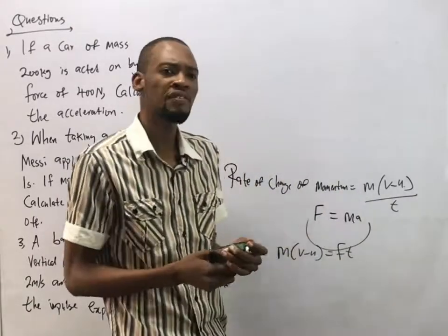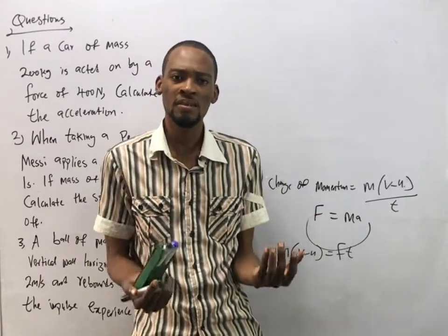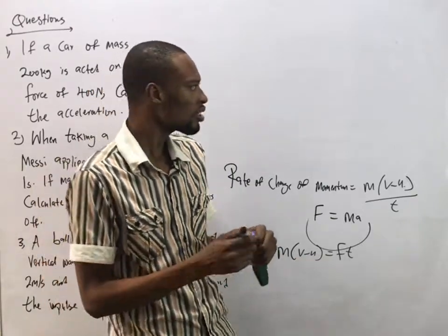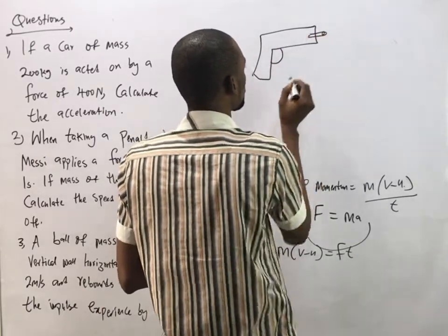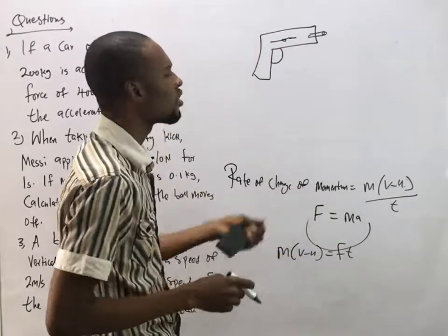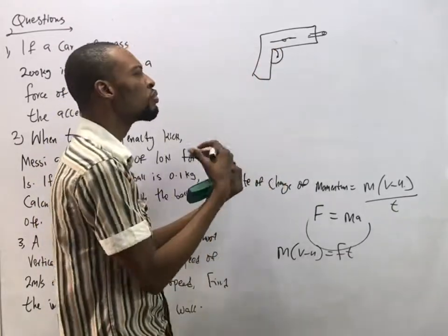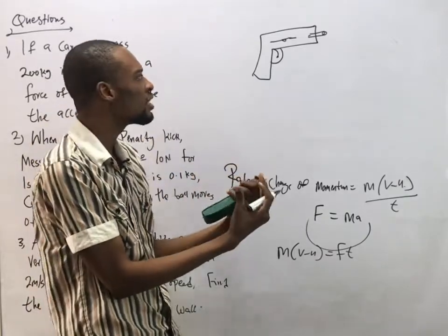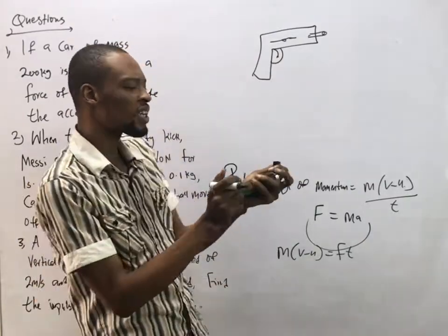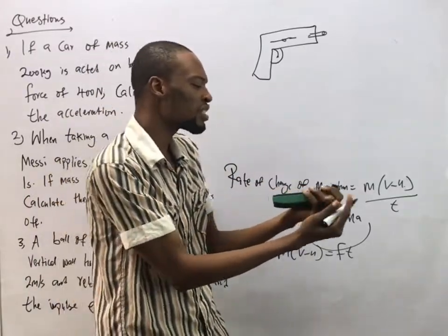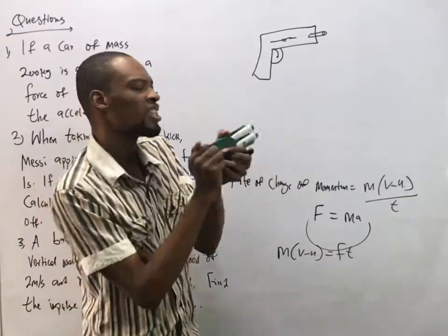Momentum also obeys the law of conservation of momentum, which states that when two bodies collide, total momentum remains the same provided no external force acts. For example, when a gun fires a bullet, the velocity of the bullet leaving the gun is equal and opposite to the recoil velocity of the gun. That's why shooting is dangerous — the gun shakes back with the same momentum.